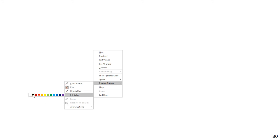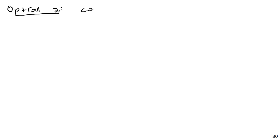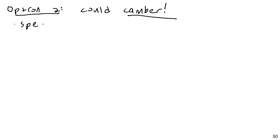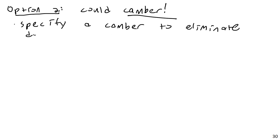Option 2: you could camber your beam. Cambering is where you specify a pre-built arc in the beam to resist dead load deflection — but only dead load deflection. This doesn't work for live load, because that would just give you deflection in the opposite direction when the live load isn't there.